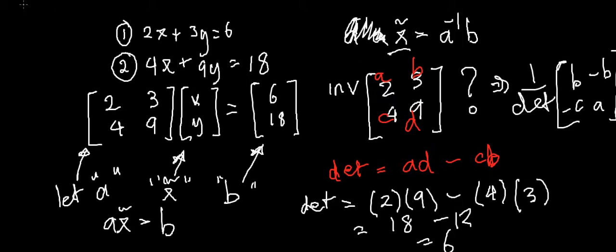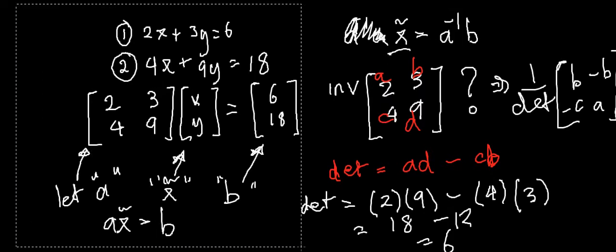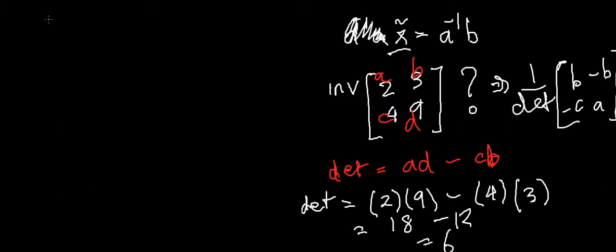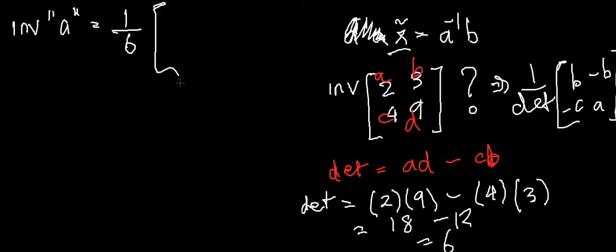So we know that the inverse of our matrix A equals 1/6 — that's 1 over our determinant — multiplied by the rearranged matrix. The new matrix has D which is 9 in the top-left, A which is 2 in the bottom-right, minus B which is minus 3 in the top-right, and minus C which is minus 4 in the bottom-left. So that's our inverse.